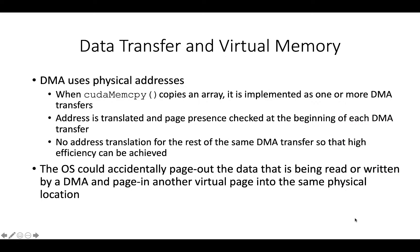The implementation of CUDA memcpy uses the DMA device. When a CUDA memcpy function is called to copy between the host and device memory, it is implemented using a DMA device to complete the task. On the host memory side, the DMA hardware operates on physical addresses — that is, the operating system needs to give a translated physical address to the DMA device. However, there is a chance that the data might be paged out before the DMA operation is complete. The physical memory location for the data may be reassigned to another virtual memory data. In this case, the DMA operation can be potentially corrupted, since its data can be overwritten by the paging activity.